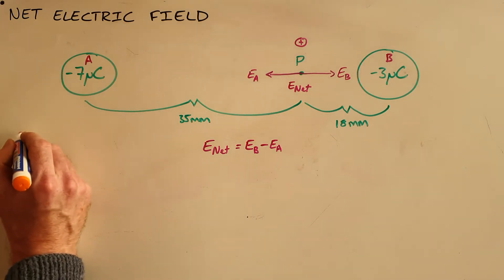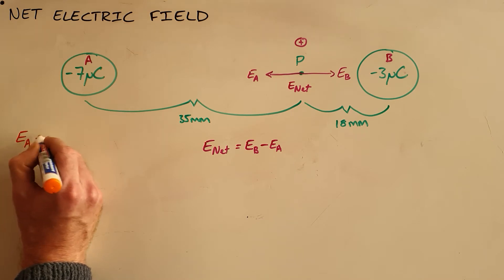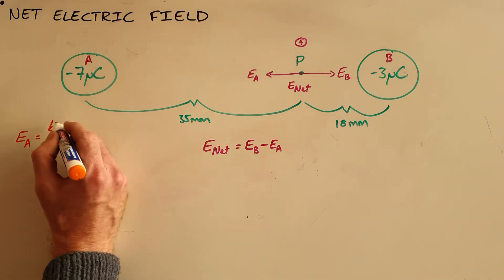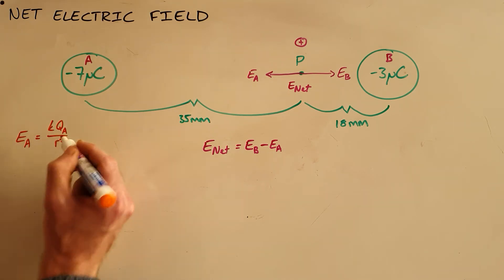From here we simply calculate the electric field as a result of each of these two charges. So the electric field as a result of A at point Q is equal to KQA over R squared, since A is creating the electric field.